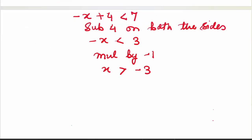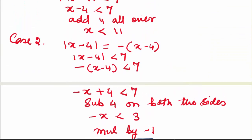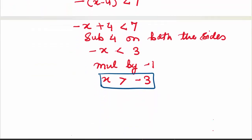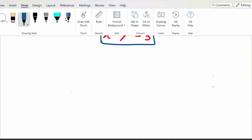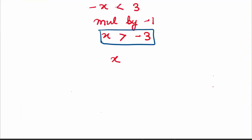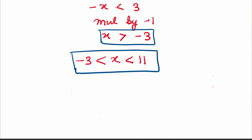We have two solutions here. One from case 1: x is less than 11, and from case 2: x is greater than minus 3. We will combine both of them and write it as x is greater than minus 3 but less than 11. So this is our final solution.